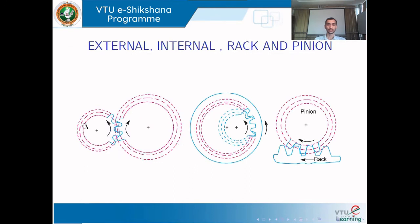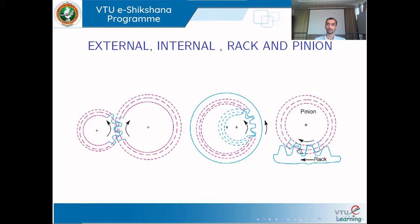In external meshing, two gears mesh on their outer surfaces. In internal gearing, the smaller gear (pinion) has teeth on its outer periphery and meshes with the internal teeth of the larger gear. In rack and pinion, the rack can be considered a gear with infinite radius, making it almost straight, while the pinion has teeth on its outer periphery.